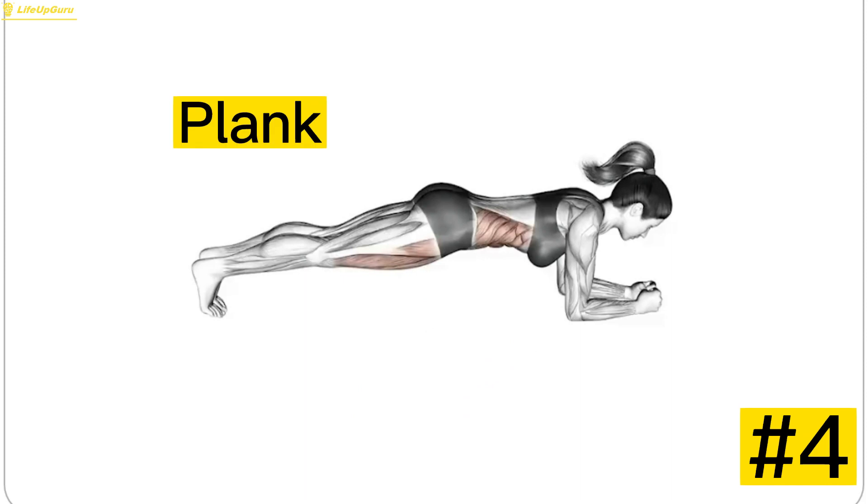Exercise 4, Plank. Don't underestimate the power of a plank. This exercise works your entire core, including your abdominals, obliques, and lower back muscles. Get into a push-up position but rest your weight on your forearms instead. Keep your body straight and hold the position for as long as you can.